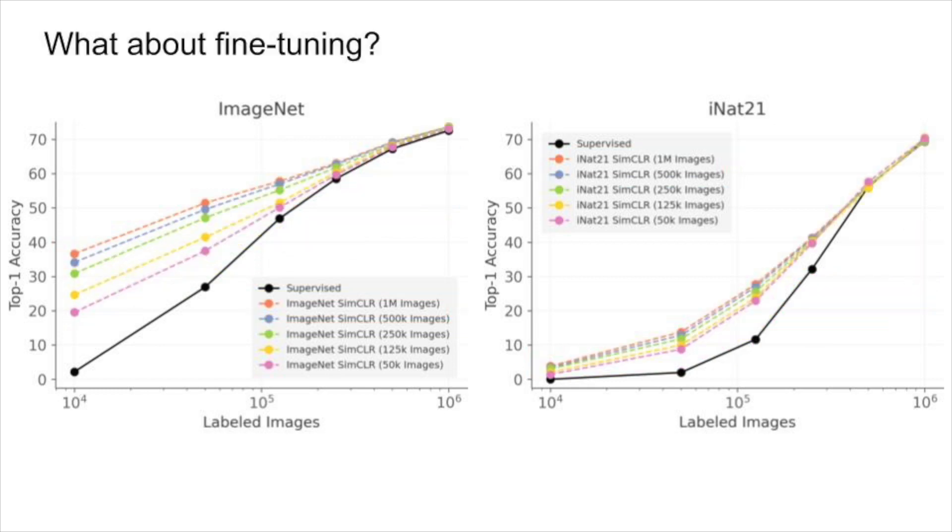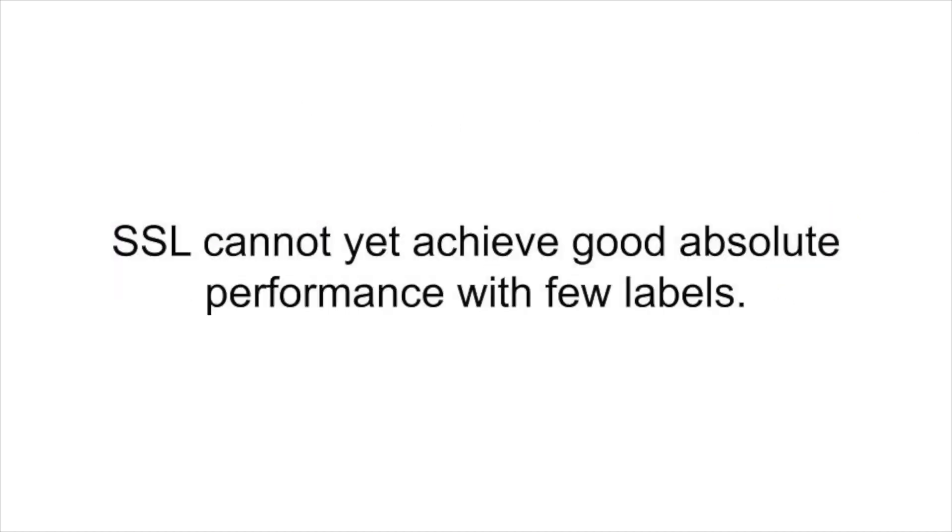We can repeat these studies with fine-tuning instead of linear classifiers, but the conclusions are similar. Getting close to fully supervised performance requires a lot of labels, and the marginal benefit of additional pre-training data shrinks quickly. Self-supervised learning cannot yet achieve good absolute performance with few labels.